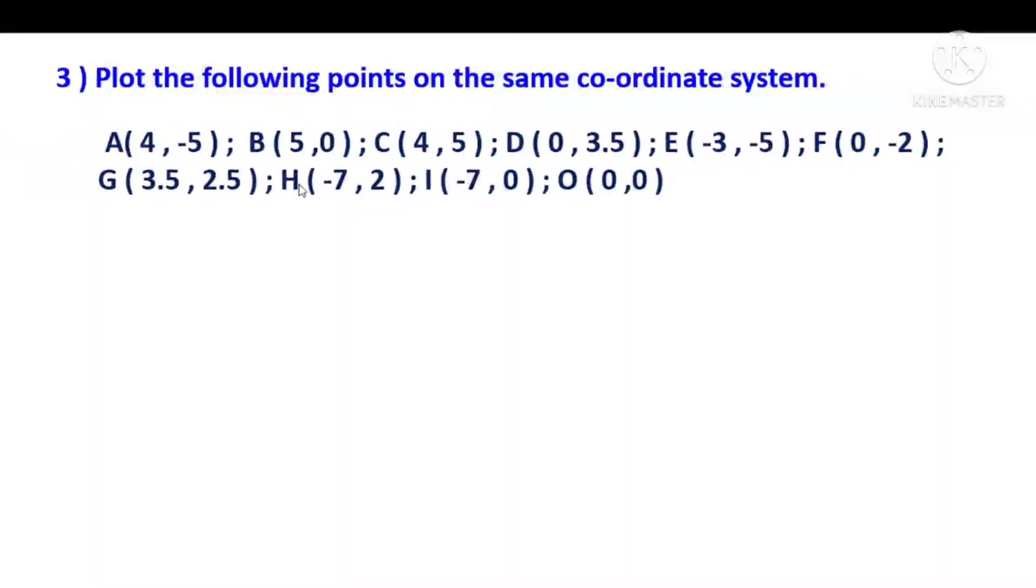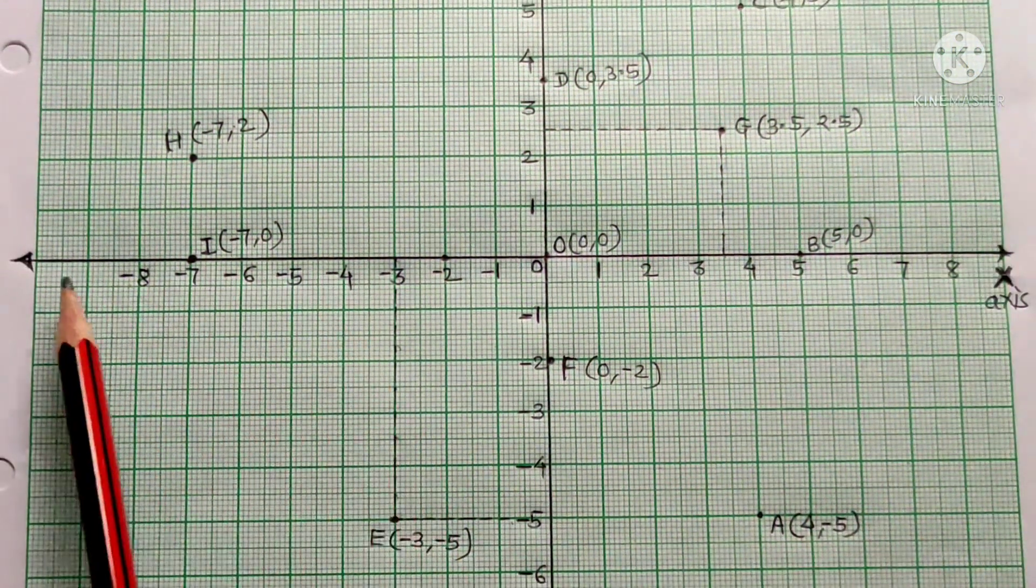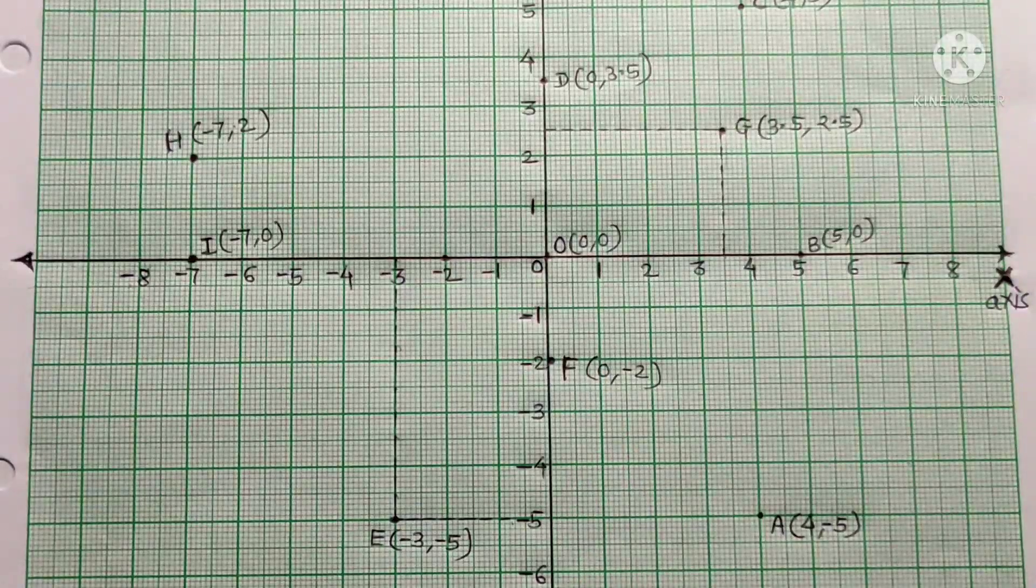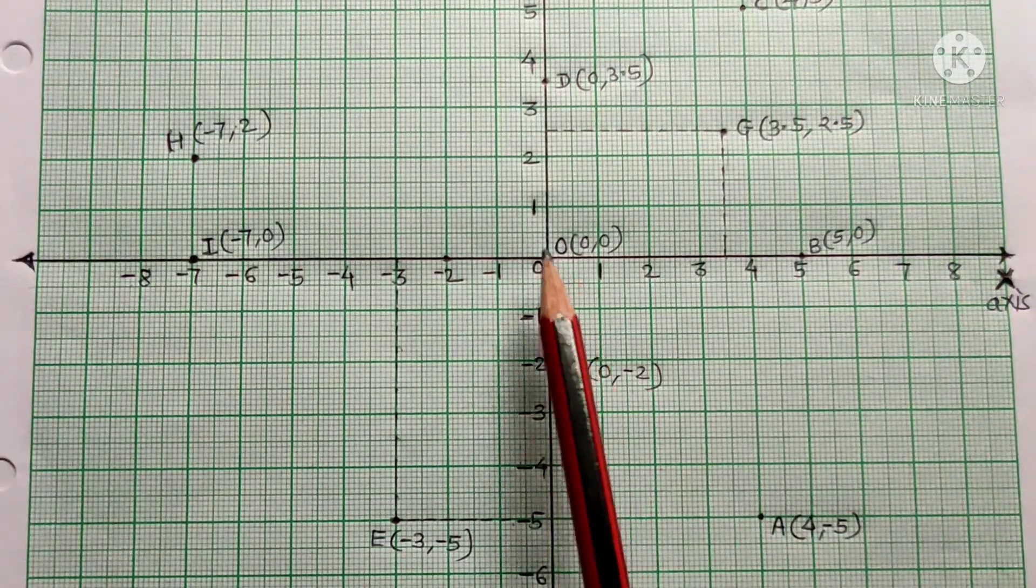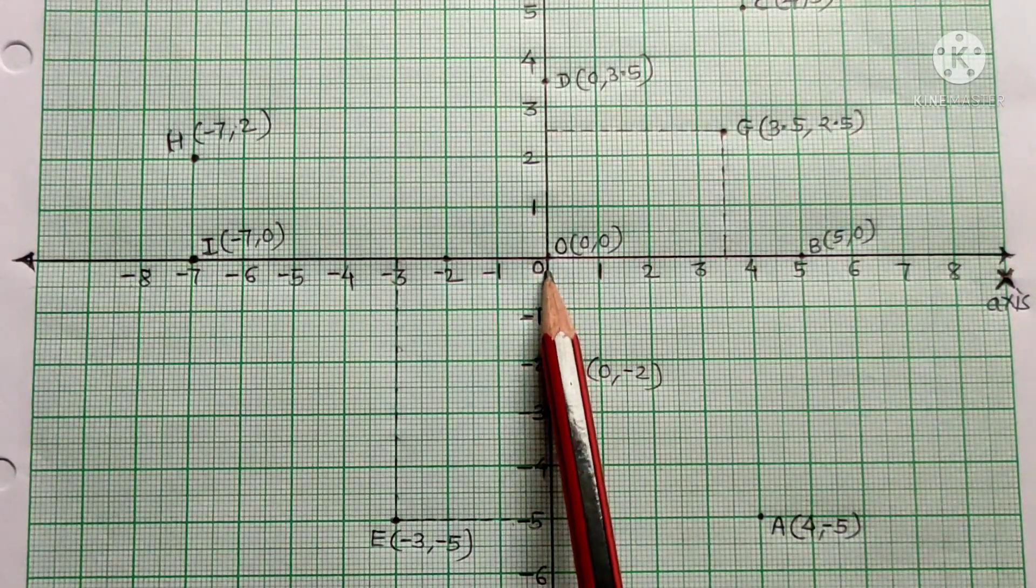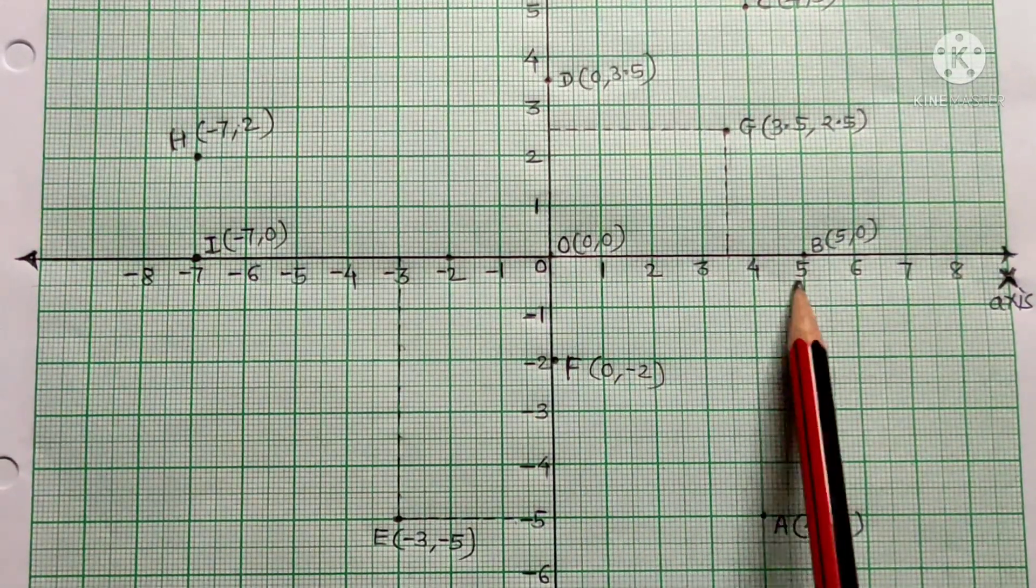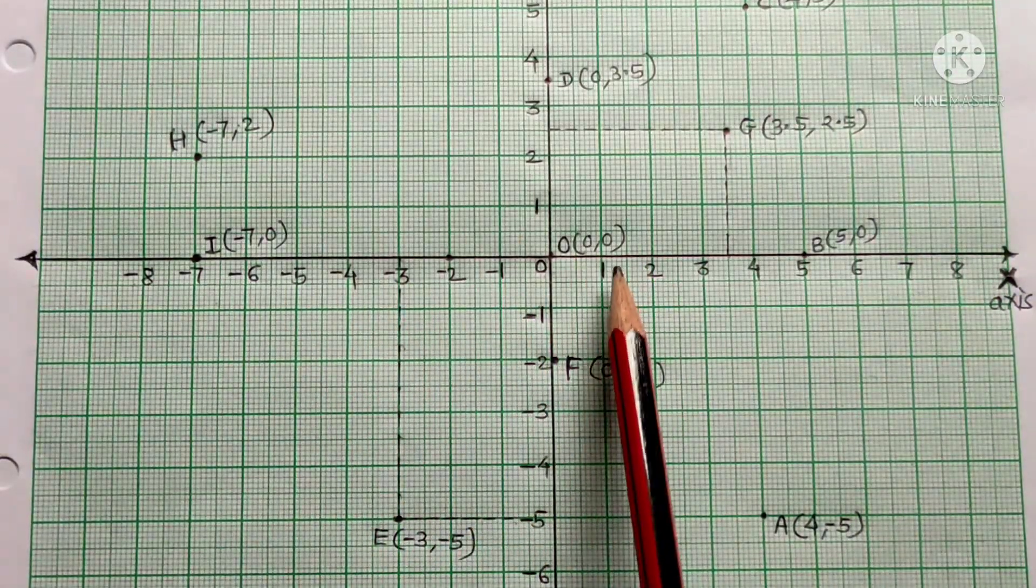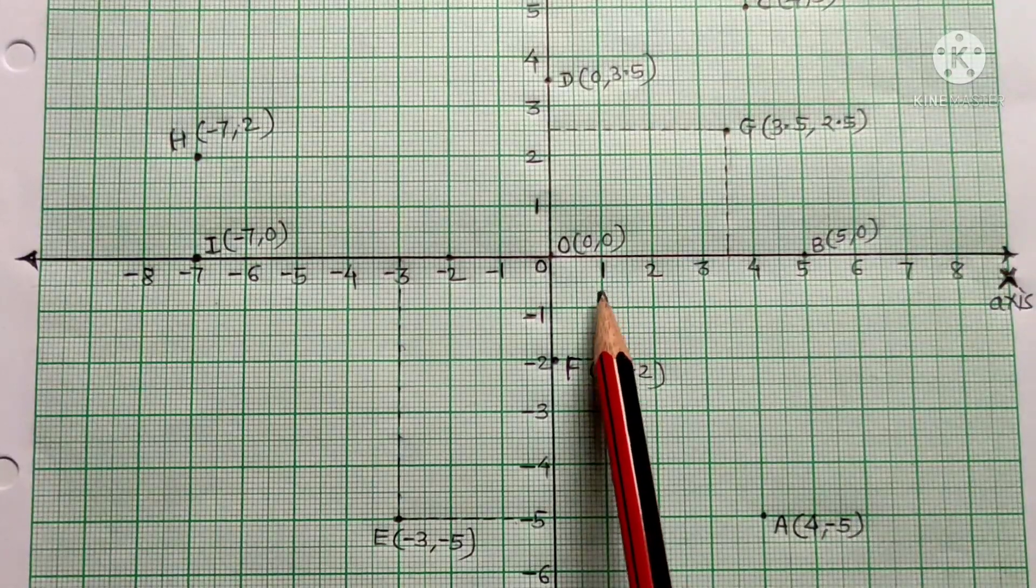Third question: plot the following points on the same coordinate system. To plot points, first draw the x-axis and y-axis. Where these two axes intersect, that's 0. Draw plus 1, 2, 3, 4, 5, 6. Also draw minus 1, minus 2, minus 3. In this way, one centimeter equals one unit on the x-axis. The same above: 1, 2, 3, 4, 5, 6. Below also: minus 1, minus 2, minus 3, minus 5.